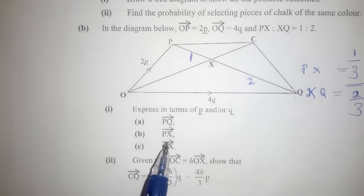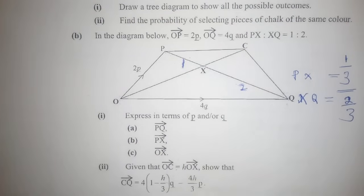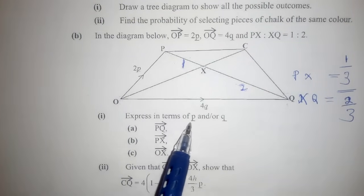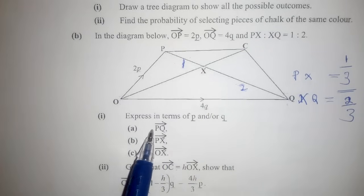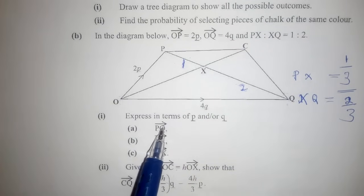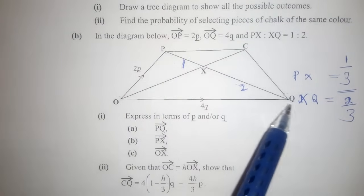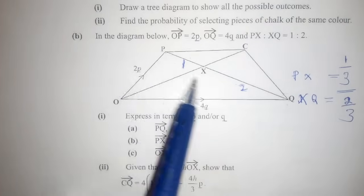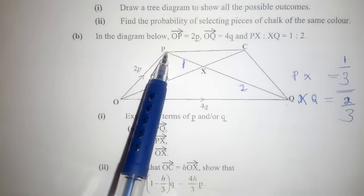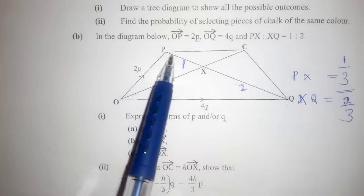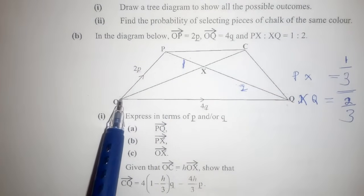We can now answer the question. The first part asks us to express vector PQ in terms of p and q. You check the vector they are asking you to find, which is PQ. You then check which other way you can move — if you are standing at P, you can move directly to Q, or if you don't want to use that route, you can move P→O→Q.